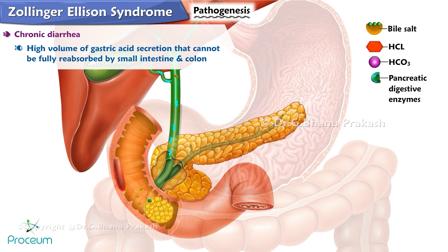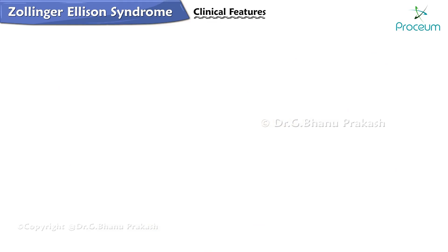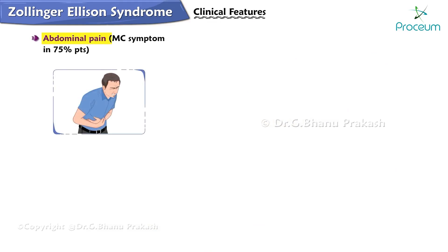Maldigestion and malabsorption both result in steatorrhea. Extremely high serum gastrin concentrations also inhibit the absorption of sodium and water by the small intestine, adding a secretory component to the diarrhea. Abdominal pain is the most common symptom, seen in 75% of patients, typically in the epigastric region due to peptic ulcer disease.